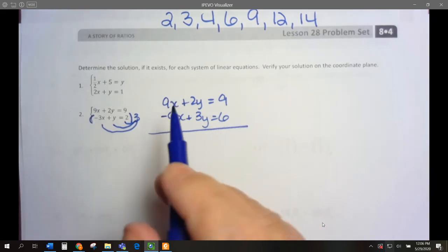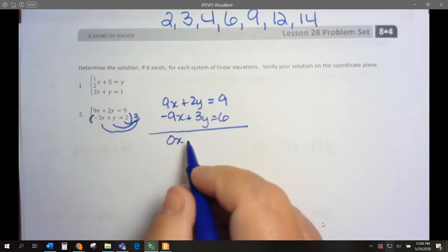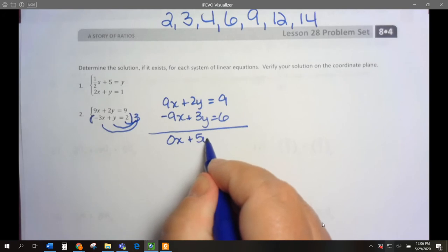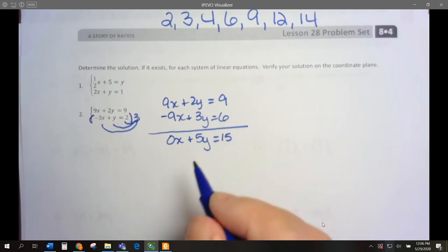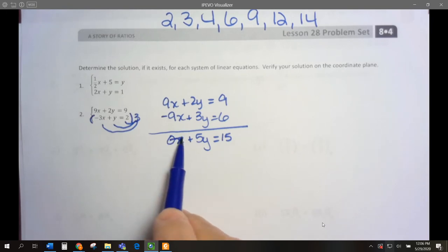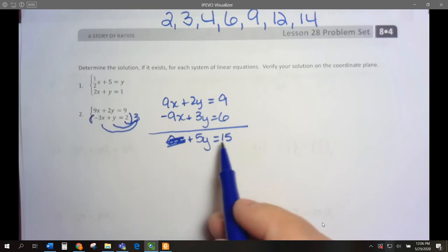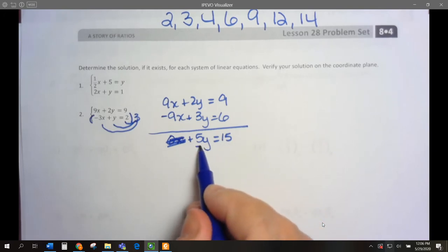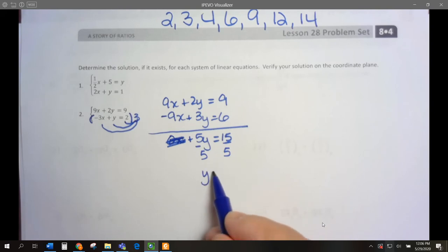9x minus 9x is 0x. 2y plus 3y is 5y. And 9 plus 6 is 15. So 0x we can just cross out. We have 5y equals 15. We would divide by 5, and y would be 3.